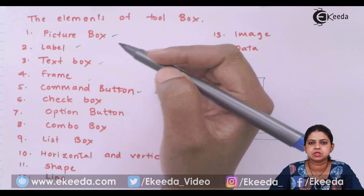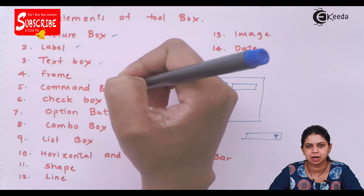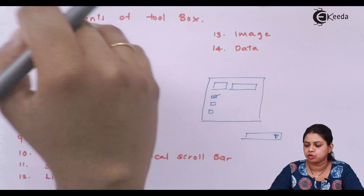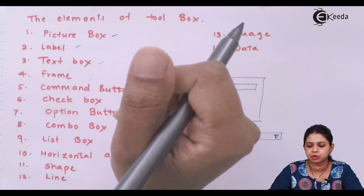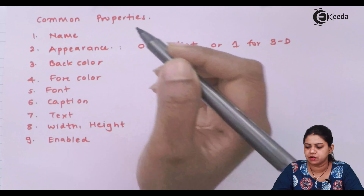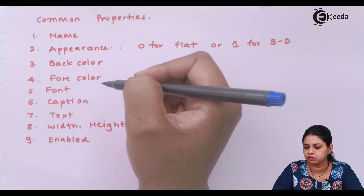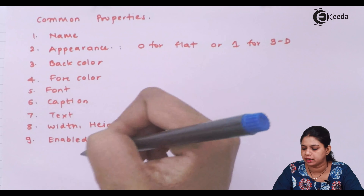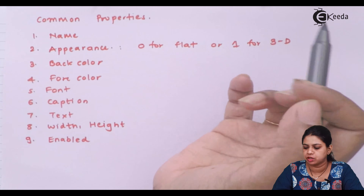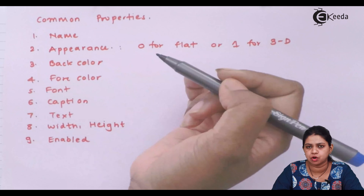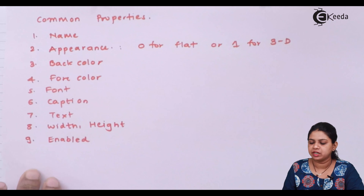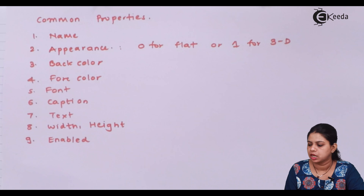The most commonly used elements of the toolbox are label, text box, and command button. At the 11th standard level, you just need to draw basic forms using these basic tools. Every tool has some properties. The common properties used are: name, appearance, back color, fore color, font, caption, text, width, height, and enabled. Appearance 0 is for flat and 1 is for 3D.